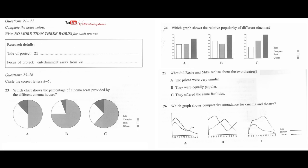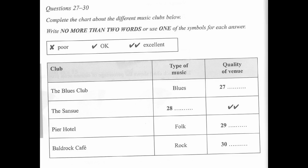In the second part of the discussion, Rosie and Mike talk about different music clubs. Look at questions 27 to 30 first. As you listen to the discussion, complete the chart about the different music clubs. Some answers have been done for you. Listen carefully and answer questions 27 to 30.